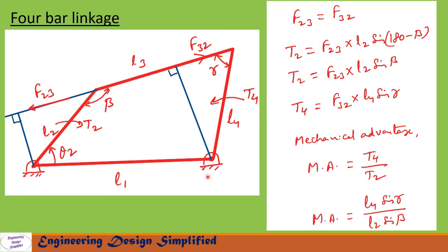Here is the four-bar linkage shown in red lines. A torque T2 is applied on the crank in the clockwise direction, and there will be a resisting torque T4 in the counterclockwise direction. The mechanical advantage is T4 divided by T2. Because of these two torques, the coupler link will undergo compression, so the compressive force in this link is F32 or F23. Let us extend this line and draw a perpendicular — this angle is beta, so this angle will be 180 minus beta, and this length will be l2·sin(180 minus beta).